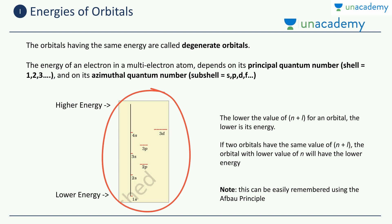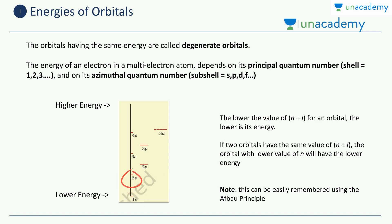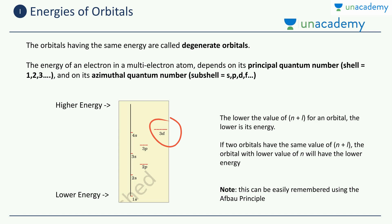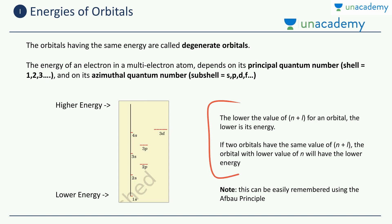This is the arrangement of the orbitals starting from lower to higher energy. The first orbital is 1s. The next energy level is 2s and then 2p. Then comes 3s, then 3p, but incidentally 4s comes before 3d. There are anomalies like this, and there are rules to handle them.